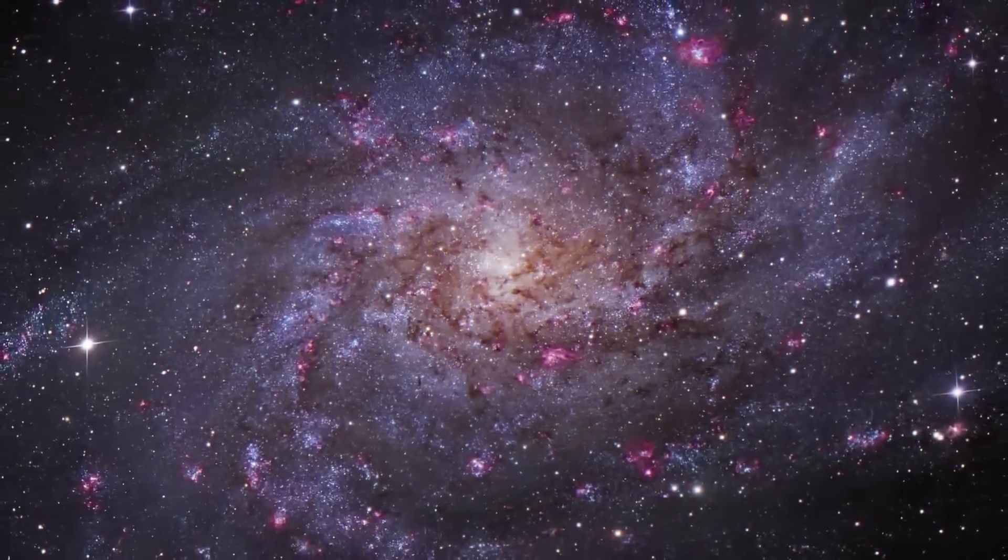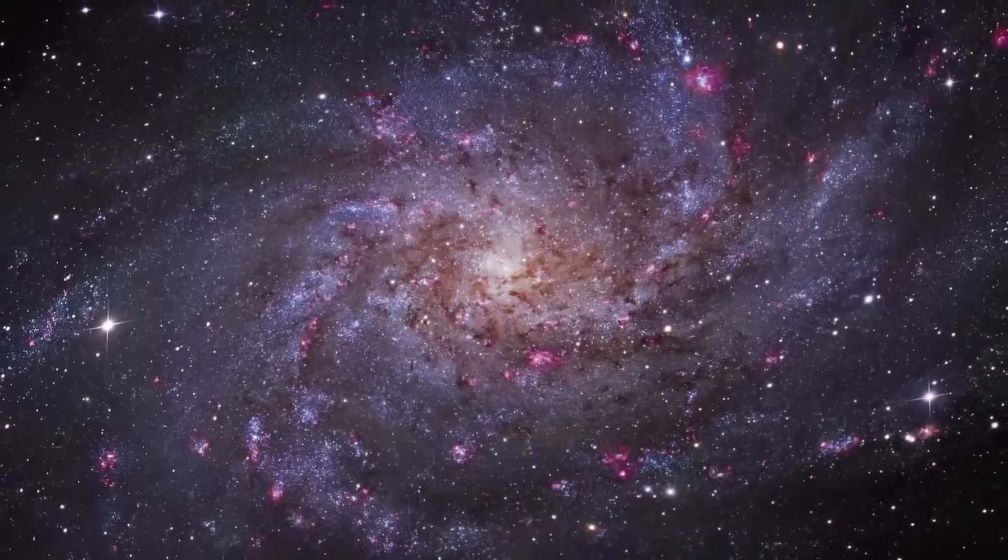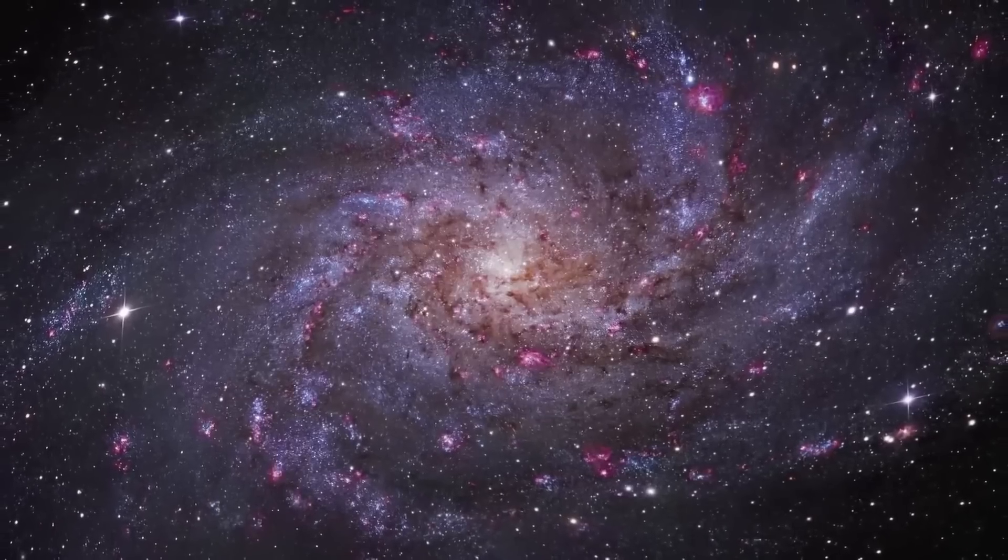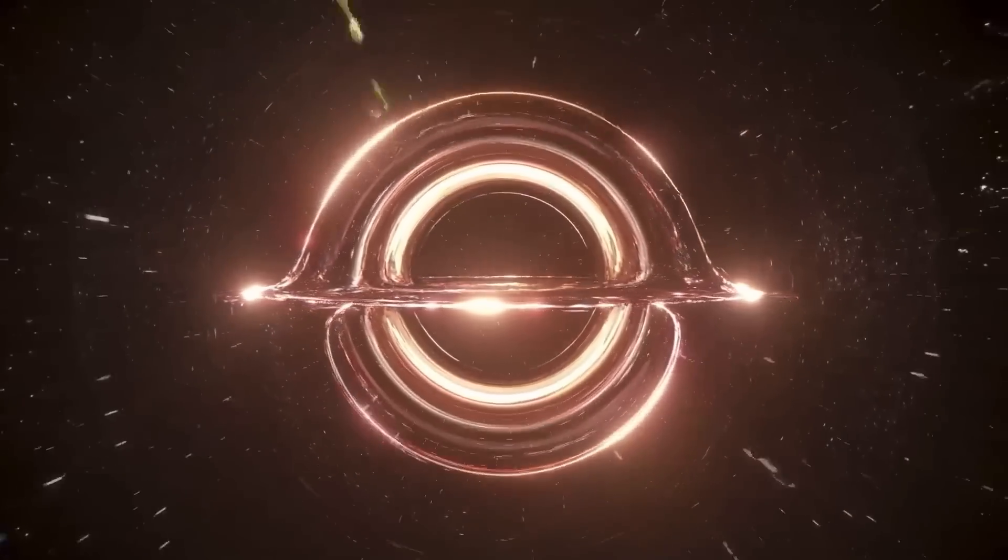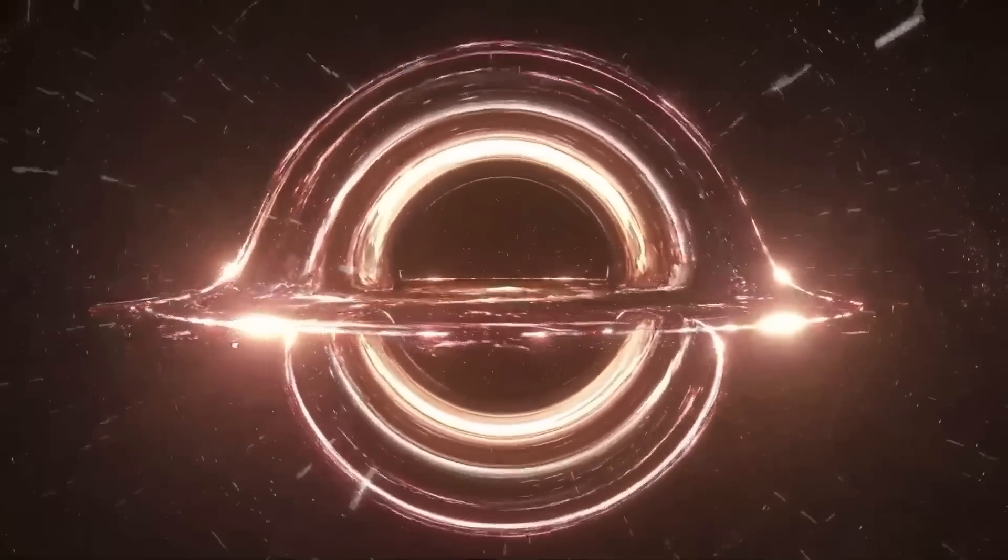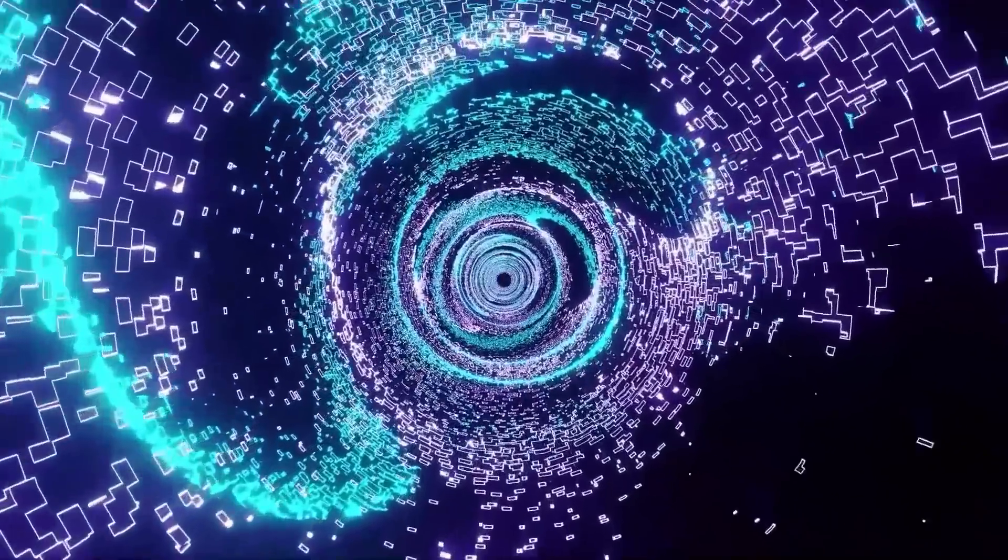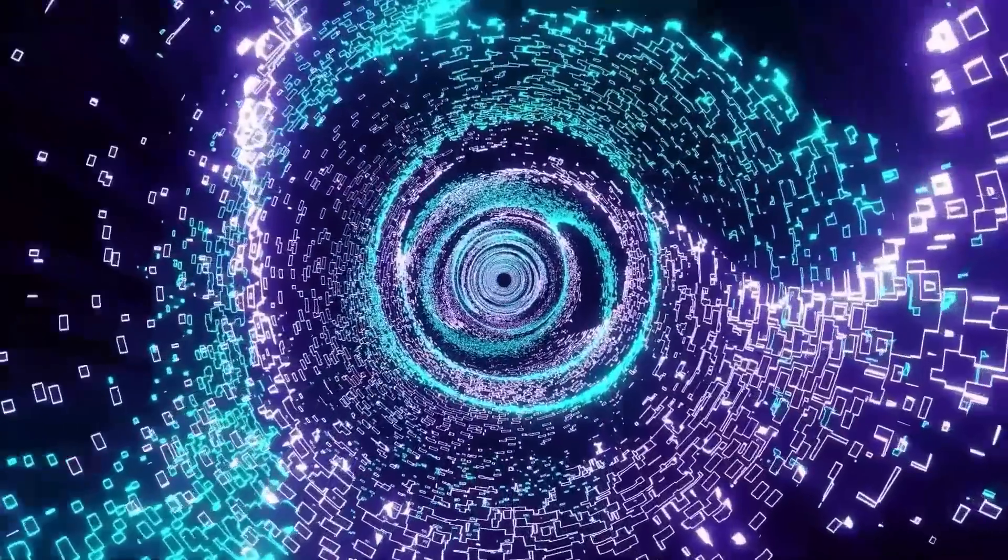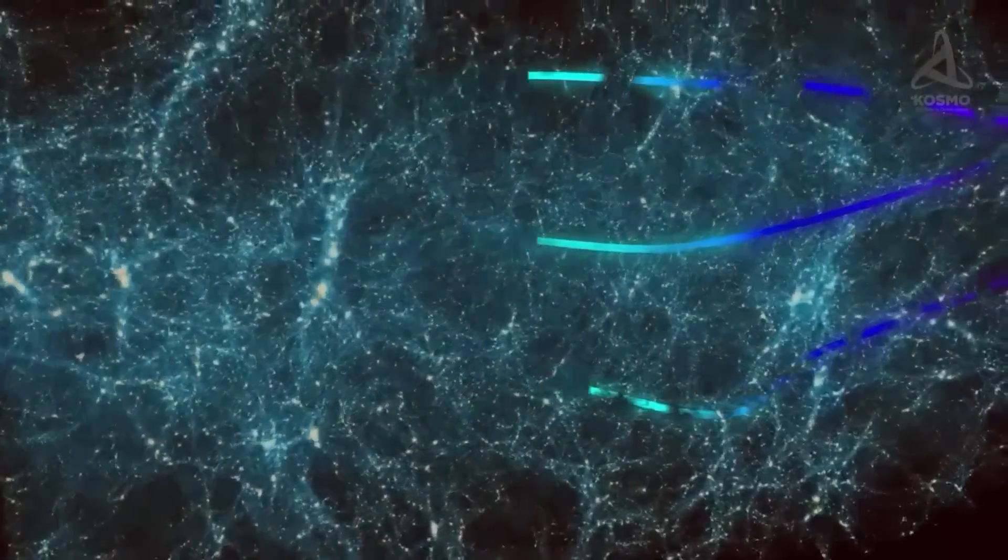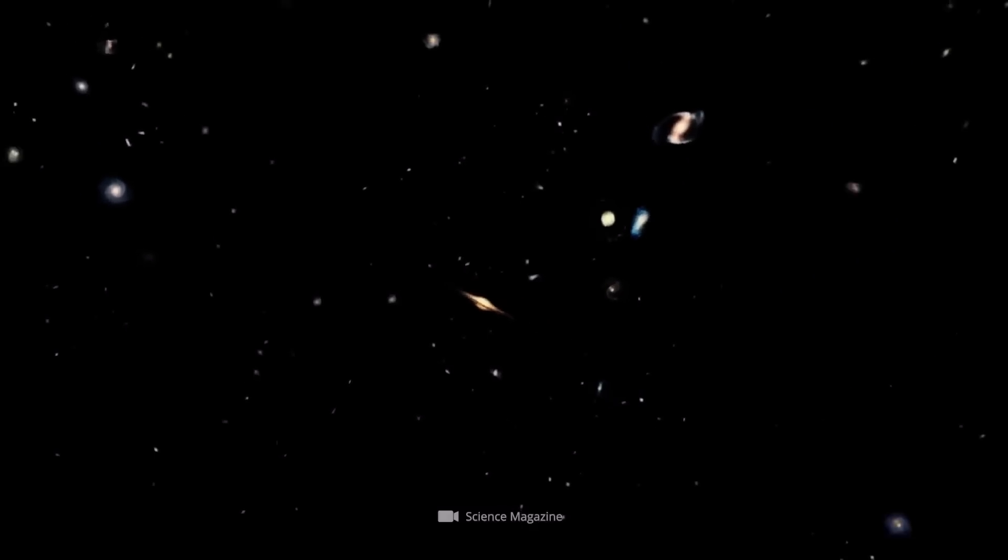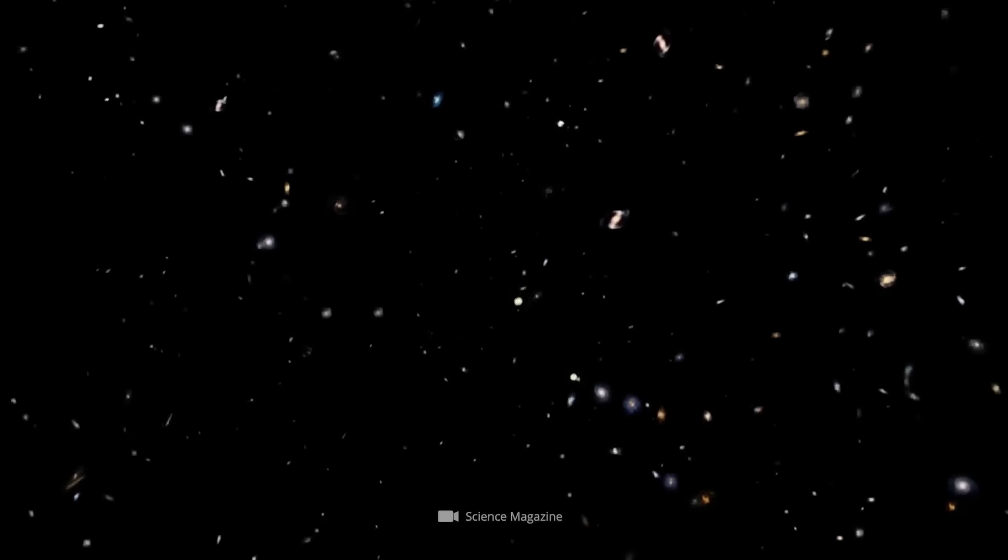Some studies have suggested that the dark flow may be real and could be caused by the presence of a large, massive structure in the universe that is pulling these galaxy clusters towards it. Other studies have been unable to confirm the existence of the dark flow and have suggested that the observed motion of the galaxy clusters may be due to other factors, such as systematic errors in the measurements. As far as its existence goes, the dark flow may very well be present outside the observable universe.